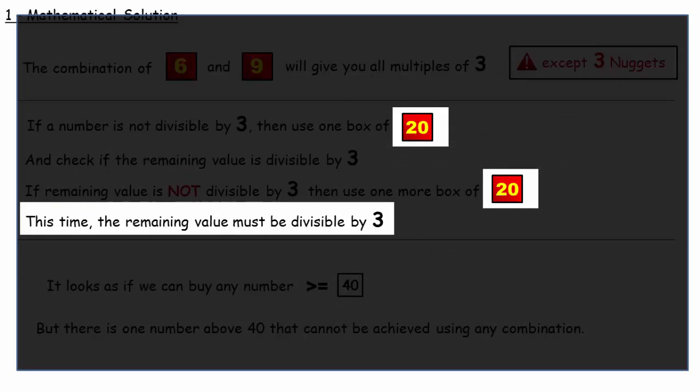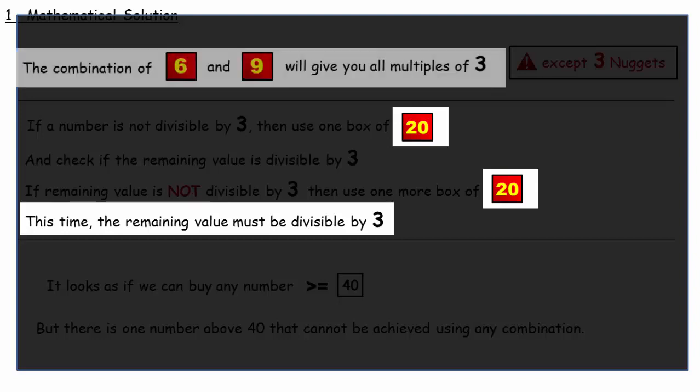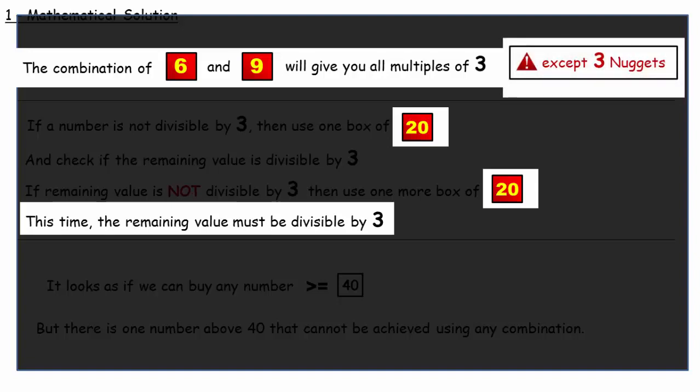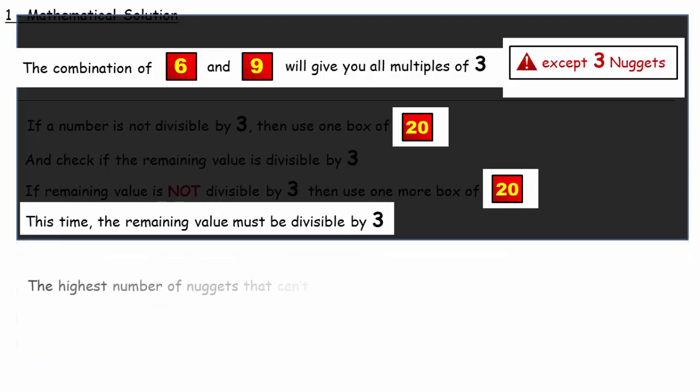After using a maximum of 2 boxes of 20, the remaining value must be divisible by 3. But right in the beginning we have seen that there is one number that is divisible by 3 but cannot be achieved using any combination of 6 and 9 nuggets boxes. And that number is 3 itself. So the highest possible number of nuggets that cannot be bought is 40 plus 3. That's equal to 43.